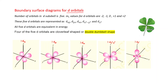There are 5 orbitals in the d sub-shell, represented as dxy, dyz, dxz, dx²-y², and dz². In the third shell these are 3dxy, 3dyz, 3dxz, 3dx²-y², and 3dz². In the fourth shell they are prefixed with 4. We will discuss the shapes of the 3d orbitals.